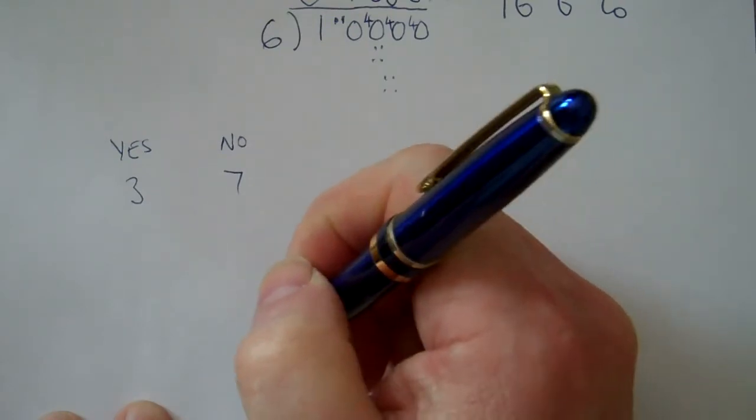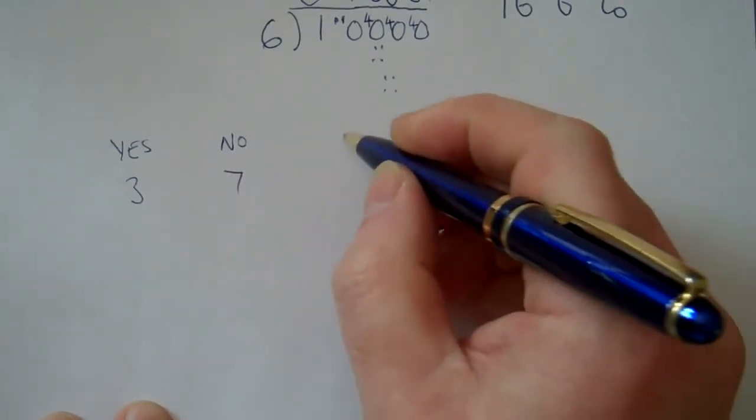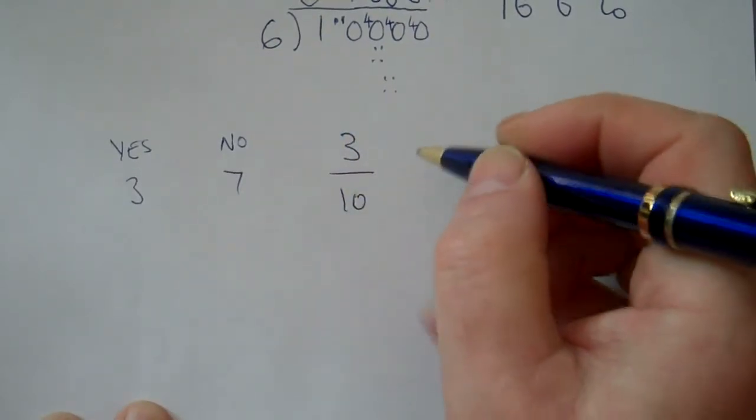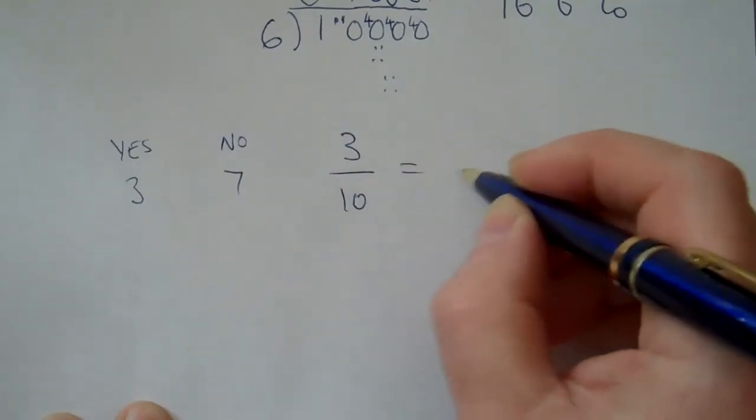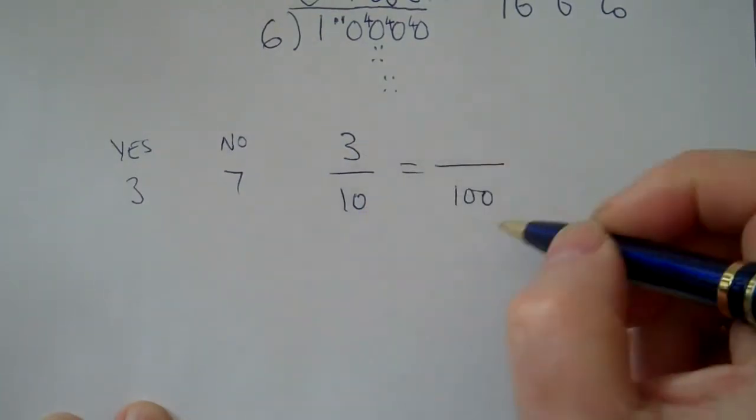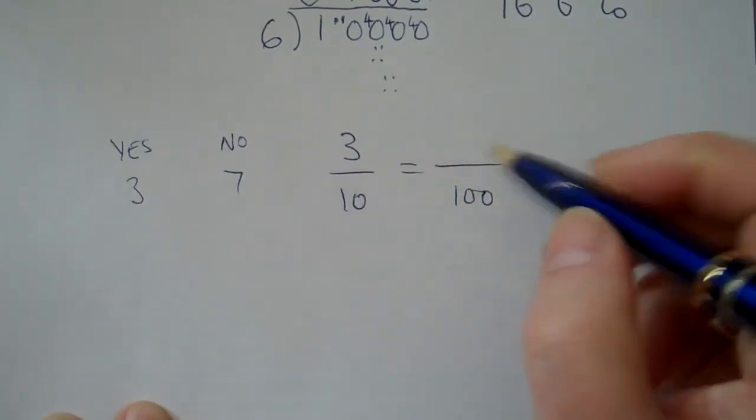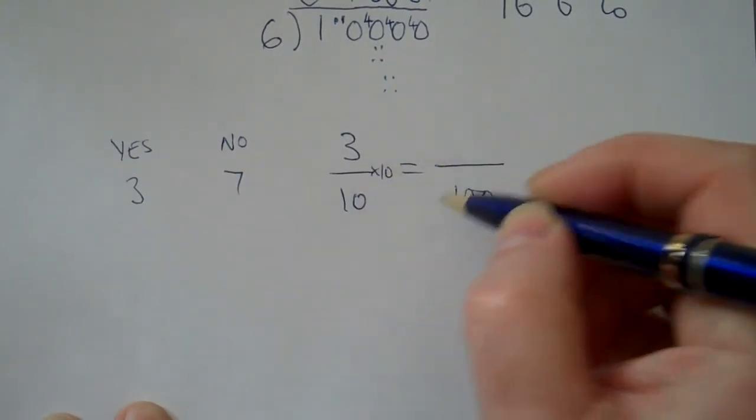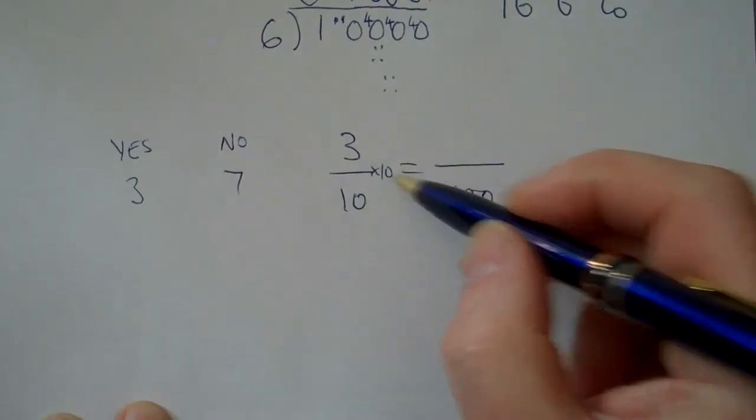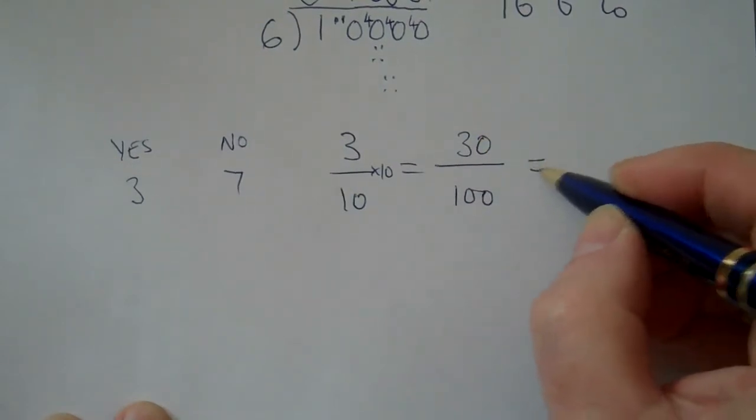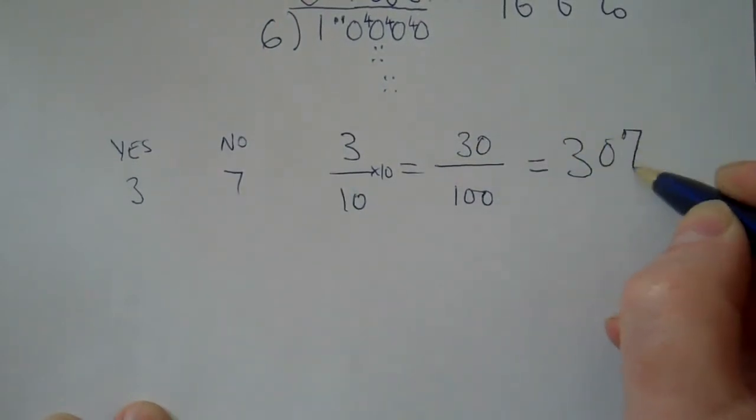What percentage of people said yes? Well, three out of ten said yes. We've got to convert that into a percentage so we've got to find out what it is over a hundred. Ten does go into a hundred so we can multiply it up directly. How many tens in a hundred? Ten tens are a hundred. So that's our multiplier. Ten tens are a hundred. Three tens are thirty. So we can say that thirty percent of people we asked said that they did like Marmite.